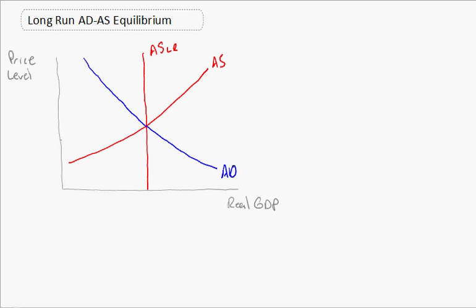Let's look at the long-run equilibrium. Equilibrium occurs at point E, right here — the intersection of the long-run aggregate supply curve with the short-run aggregate supply curve and the aggregate demand curve. This long-run equilibrium tells us the price level, and we know that output in the long run is always at potential GDP.